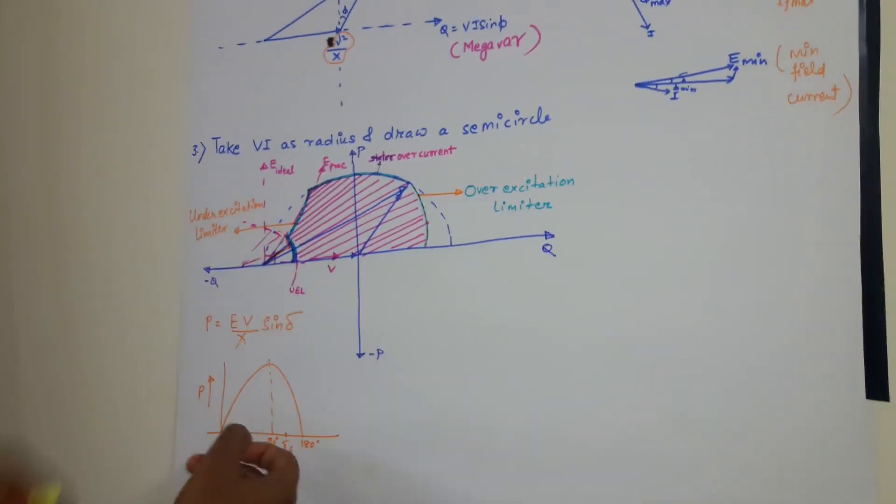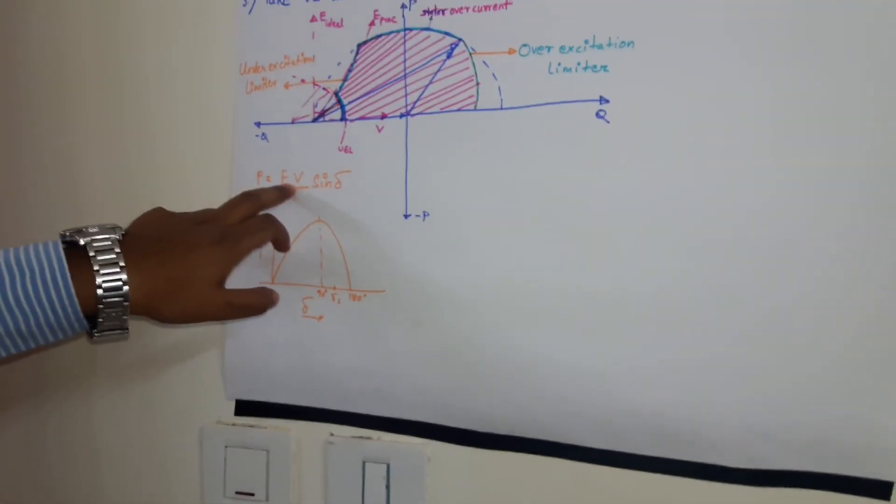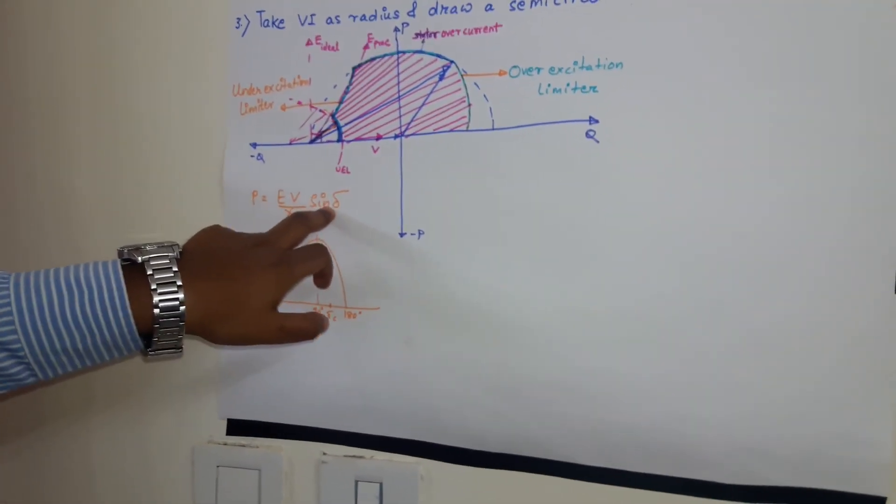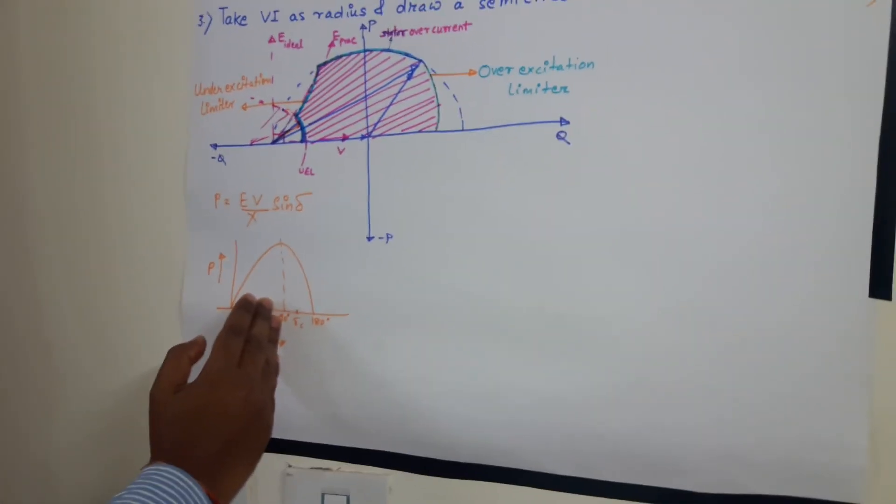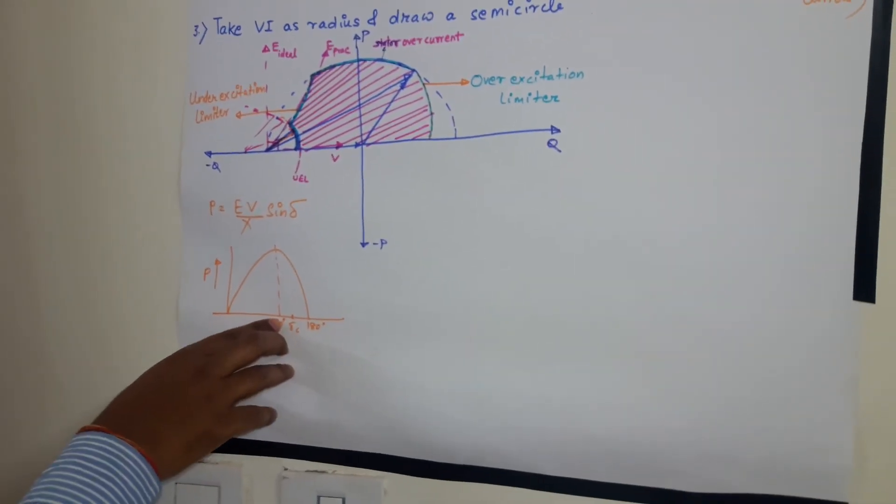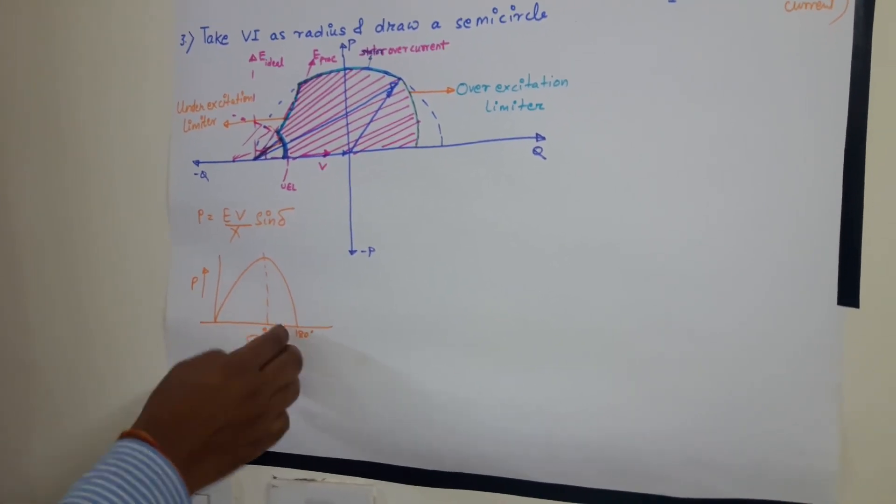Now coming to this diagram. P is equal to EV by X sine delta, all of you know. Generator can maximum operate smoothly up to 90 degree, or we can say at 110 or 120 degree, that is critical clearing angle.